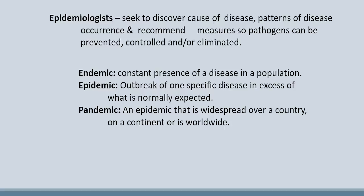An epidemic occurs when an outbreak of a specific disease is in excess of what's normally expected. For example, if one year the flu has a much higher level of occurrence in a certain area, that might be considered an epidemic. Or on a college campus, if gonorrhea or chlamydia have a spike in incidence, that too might be considered an epidemic. A disease is pandemic when it's at an epidemic level and is widespread over a country, a continent, or worldwide.